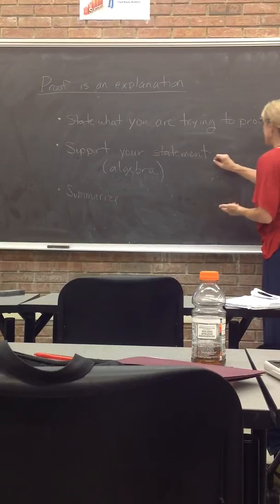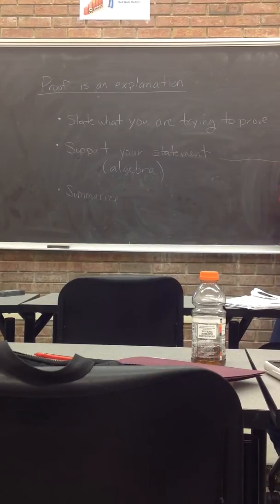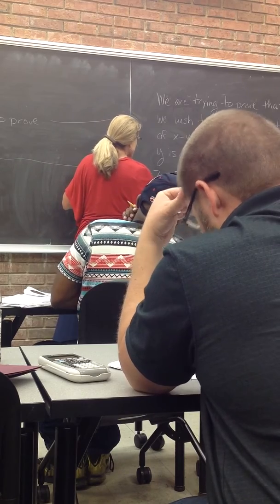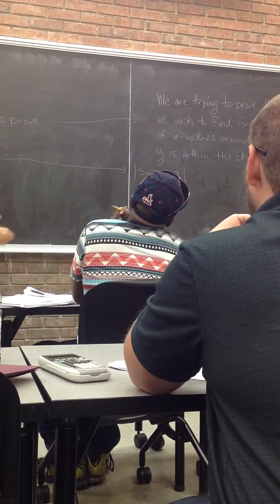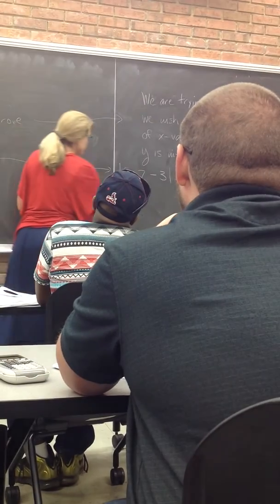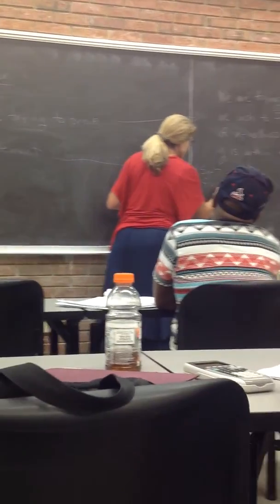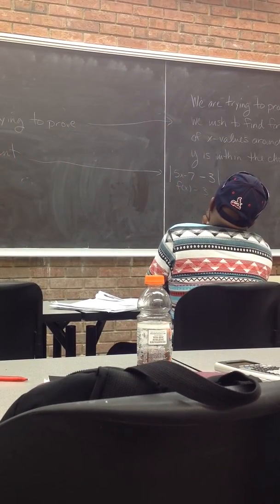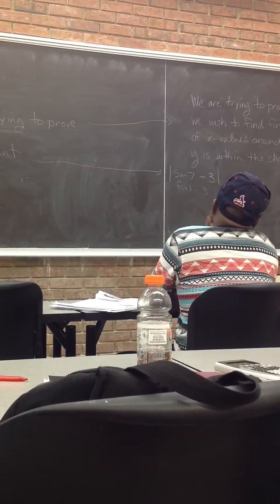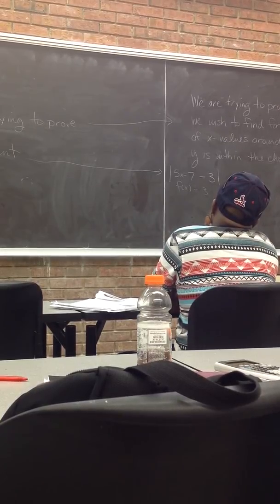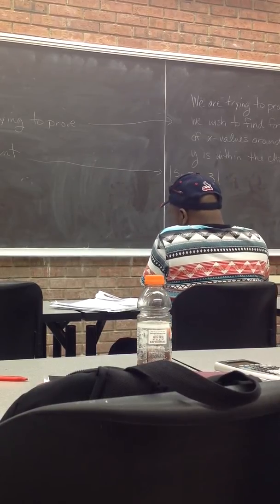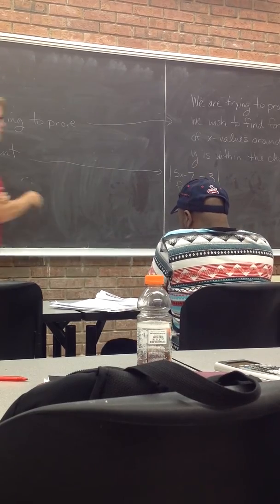In these epsilon delta proofs, you always can start the algebra part by doing the following: writing down your function minus what you think the limit is. You always, the middle part where you're trying to do your support statement. Then once you write that down, then you start to clean it up.